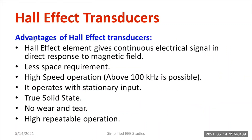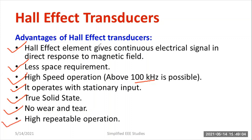The major advantages of the Hall effect transducer include: it gives a continuous electrical signal in direct response to the magnetic field; space requirement is very less; high speed of operation — more than 100 kHz; it operates with a stationary unit with no moving parts; it is a true solid state device with no wear and tear; it has high repeatable operation; and it is reliable.